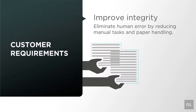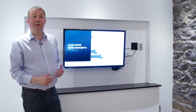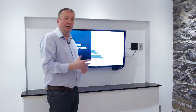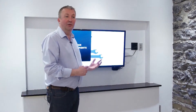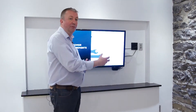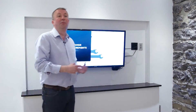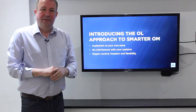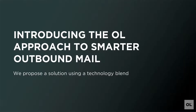And finally, you're trying to improve integrity — making sure that the right invoice goes in the right envelope to the right customer. If you're not doing that, you're going to end up with very upset customers because they're getting an invoice for something they never purchased. So let's introduce the Objective Bloom approach to smarter outbound mail.